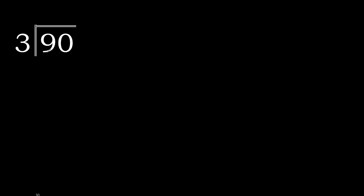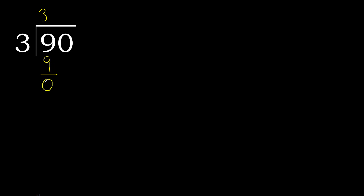90 divided by 3. First, 9 is not less, so we work with 9. 3 multiplied by which number is nearest to 9 but not greater? 3 multiplied by 3 is 9 — it is not greater. So 9 minus 9 equals 0.